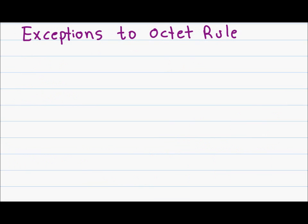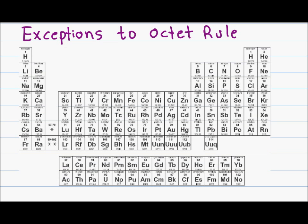Every rule has exceptions, and the octet rule is no different. The first exception are the atoms in group 3A. These atoms are relatively small and can therefore be happy with just six electrons rather than eight in its valence shell.